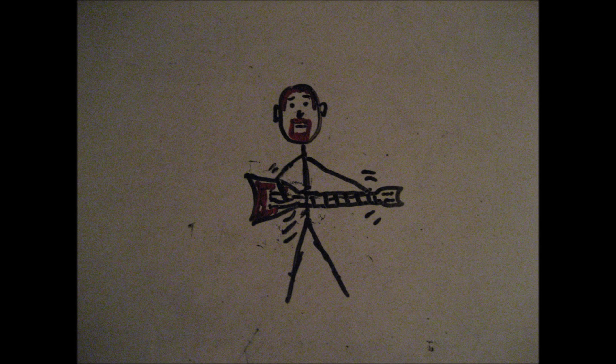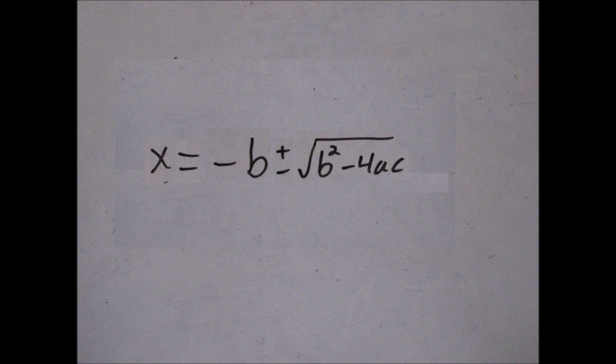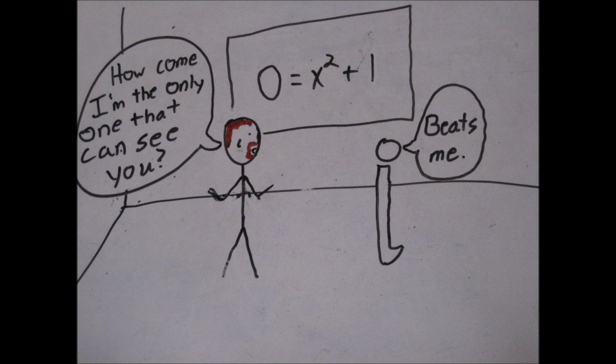Start with negative b in our new revolution. Plus and a minus give us not one, but every solution. Next, under the radical sign, place a b squared minus 4ac. This tells us the type of roots. Are they real or imaginary?